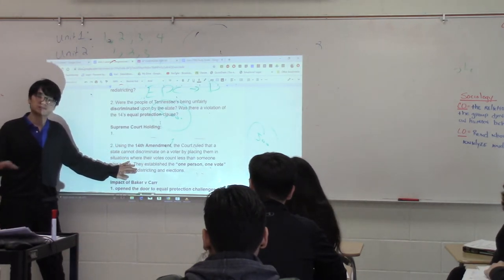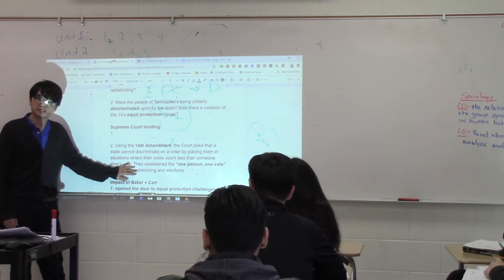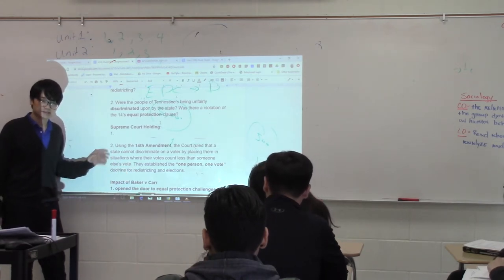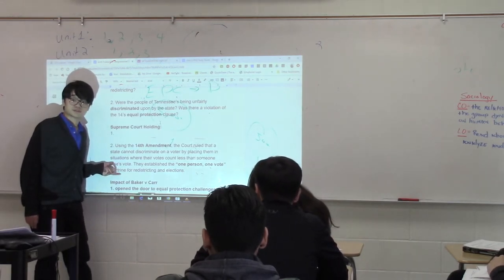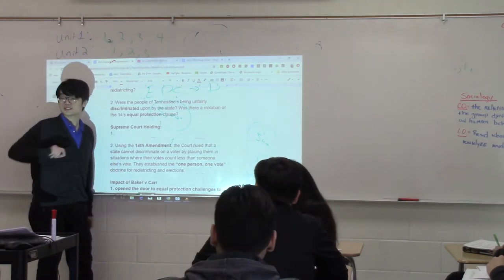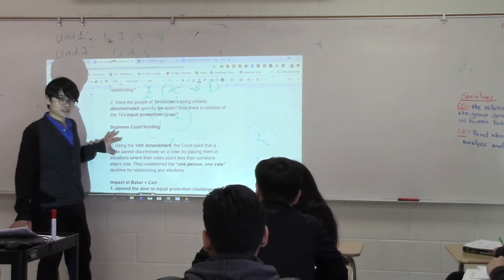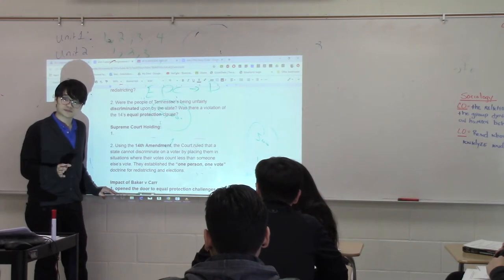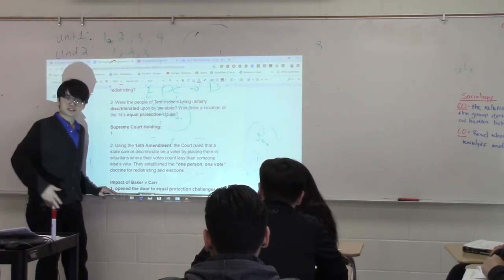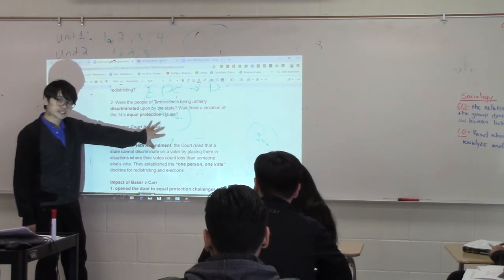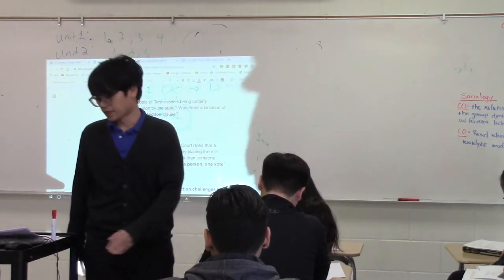Why does Tennessee have to make their districts equal? Because otherwise it would be discriminatory. This scared off a lot of states. After this decision, a lot of states — including our state — realized some of their districts don't have equal population. So to avoid getting in trouble with the Supreme Court, they redrew their district lines to make them more equal in population. That's why yesterday, when I asked you to draw those district lines, the one rule was they need to be connected and have equal population — it's because of this case.